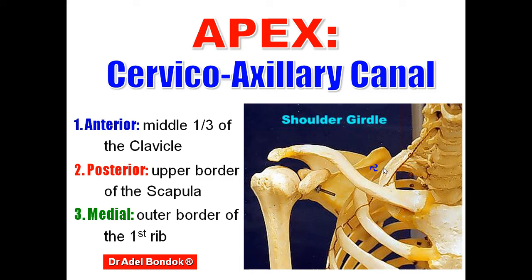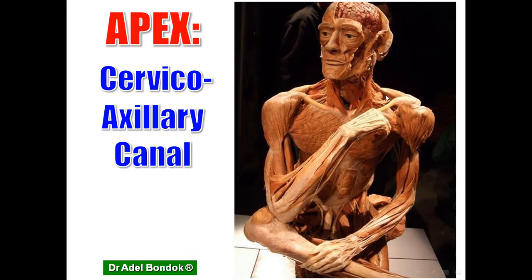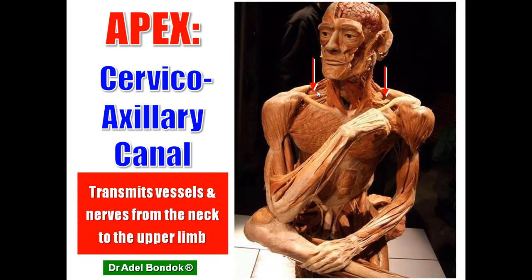Therefore, the axilla begins at the outer border of the first rib. The cervical axillary canal is bounded anteriorly by the clavicle, posteriorly by the upper border of the scapula, and medially by the first rib. Its importance: it transmits vessels and nerves from the neck to the axilla.